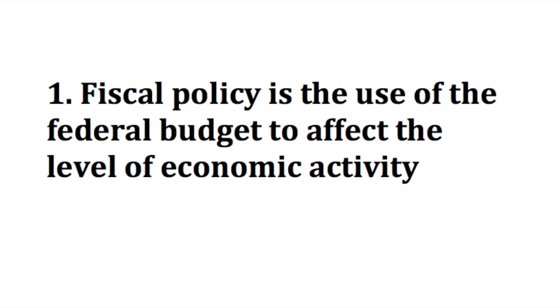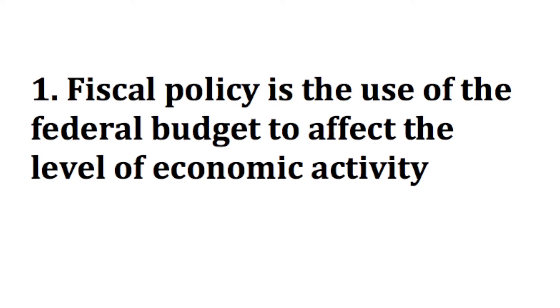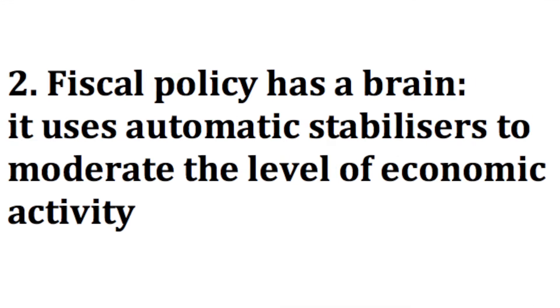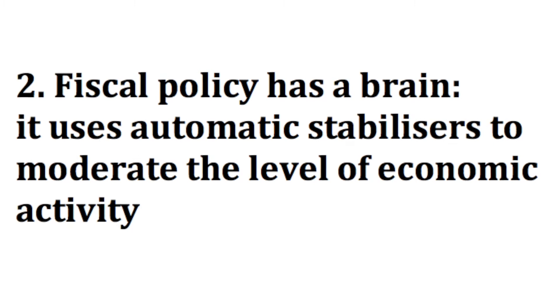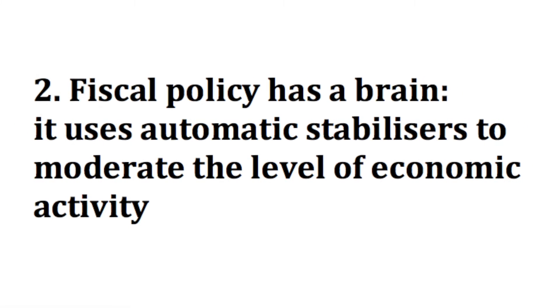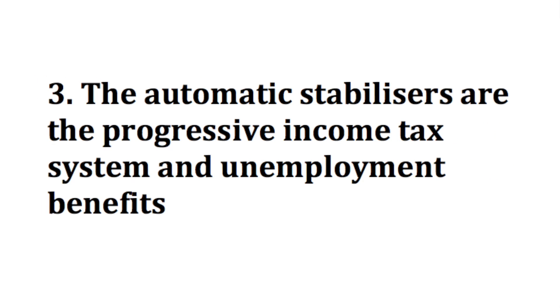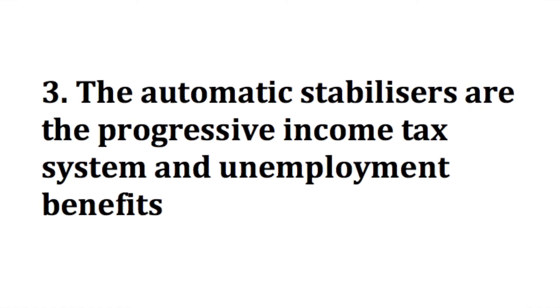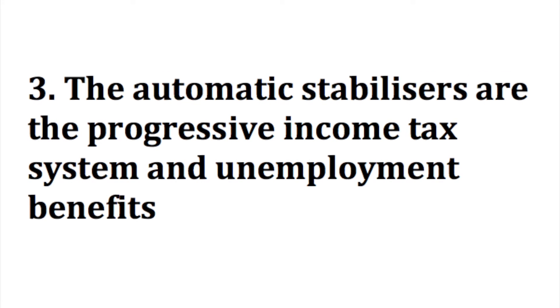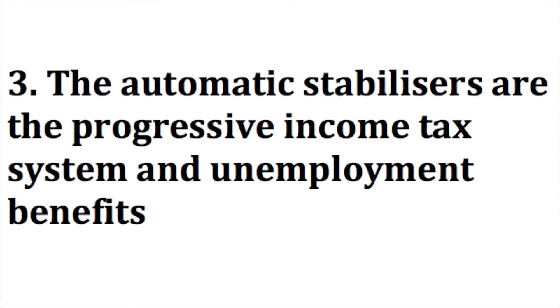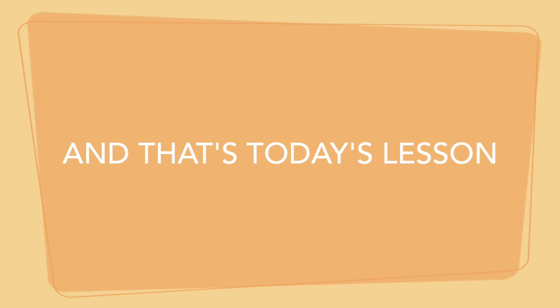So, what should you take from today's lesson? Here are the three things you need to remember. 1. Fiscal policy is the use of the federal budget to affect the level of economic activity. 2. Fiscal policy has a brain — it uses automatic stabilisers to moderate the level of economic activity. 3. The automatic stabilisers are the progressive income tax system — the more you earn, the more tax you pay — and unemployment benefits. And that's today's lesson. Thank you.